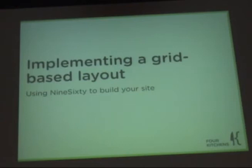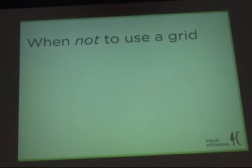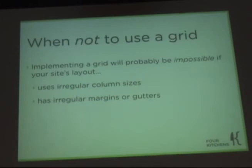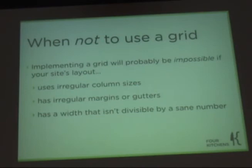Let's talk about implementing a grid-based layout. Sometimes you do not want to use a grid. Implementing a grid will probably be impossible if your slice layout uses irregular column sizes — where the left-hand column is 231 pixels and the content is 487 and all kinds of odd numbers. If it has irregular margins or gutters, or if the distance between left and center is 32 and center and right is 14, it's a little irregular and probably impossible, especially when you try to subdivide odd numbers.